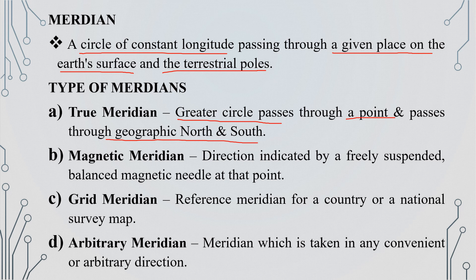The next type is Magnetic Meridian. The direction is indicated by a freely suspended, balanced magnetic needle at that point.